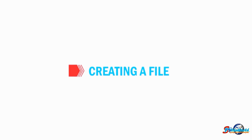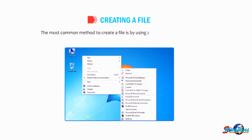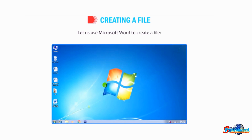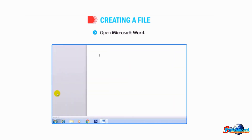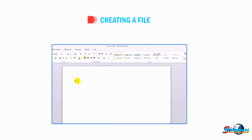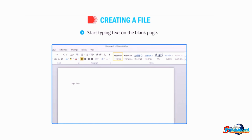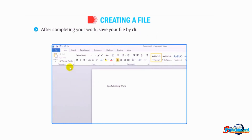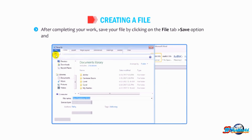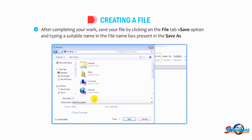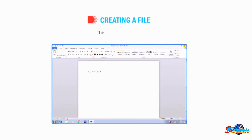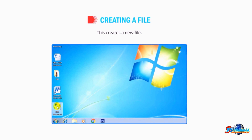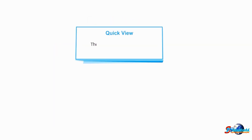Let us first understand how to create a file. The most common method is by using any application software. Let us use Microsoft Word to create a file. Open Microsoft Word — a blank page is displayed on the screen. Start typing text on the blank page. After completing your work, save your file by clicking on the File tab, then the Save option, and typing a suitable name in the file name box in the Save As dialog box. This creates a new file. The shortcut to create a new file is Ctrl+N.